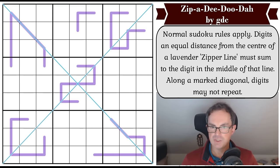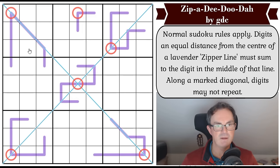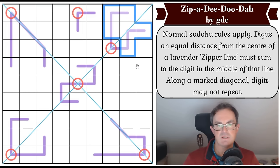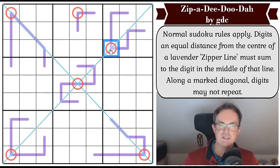Now one thing I'm going to do here is mark the centres of the zipper lines. So there, there, I think it's that one. So those are the centres of the lines, and I can immediately see something about this one. There are six cells that are not the centre. So even if we filled those six cells with the lowest digits we could, which would be one, two, three, four, five, and six, that's telling us that this centre must be at least seven.